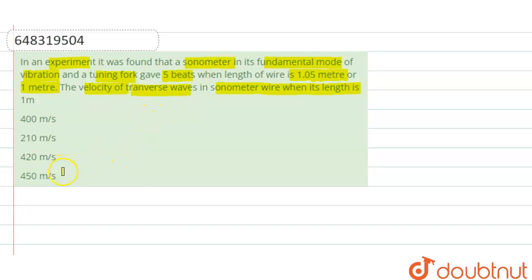We have given that we have a sonometer wire vibrating in its fundamental mode, and that sonometer wire gives five beats with a tuning fork when the length of sonometer wire is 1.5 meter or one meter. We have to determine the velocity of the transverse wave in the sonometer when the length is one meter.